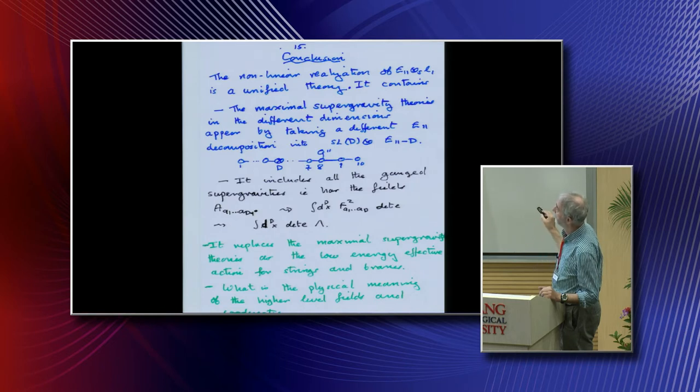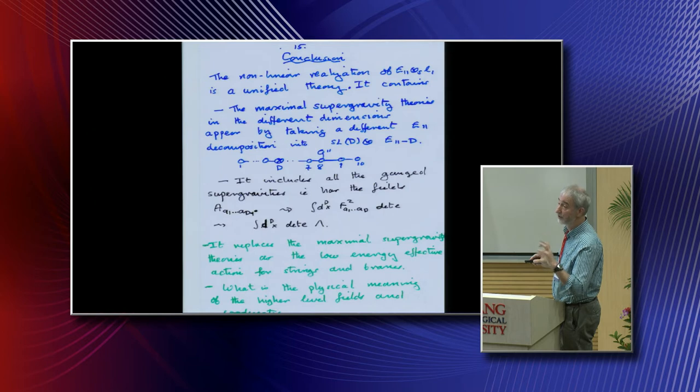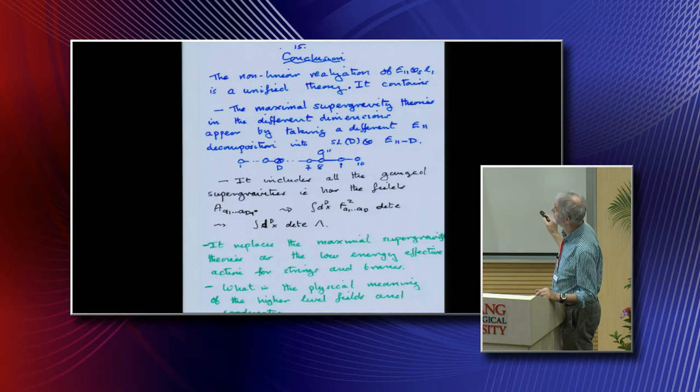This theory has accounted for all the different supergravities in the different dimensions. But I also mentioned that they were only part of what the maximal supergravities were. For example, I had these gauged supergravities, where you took a supergravity, added the cosmological constant, and found out what the result was. But it turns out this theory knows all about these, and they're also encoded in it.